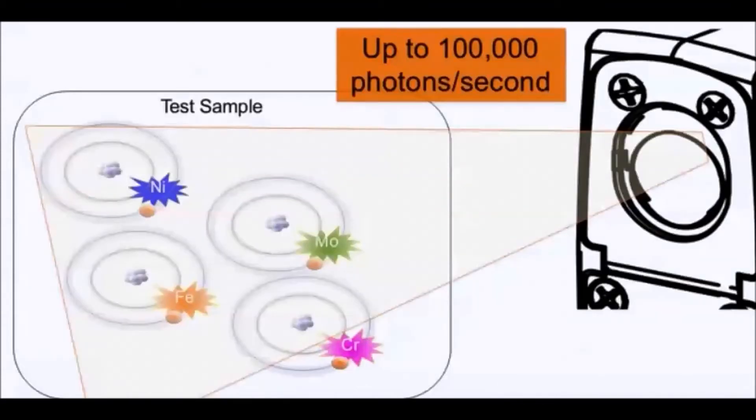While the slide diagrams that we've been looking at show single atoms, in reality tens of thousands of signature X-rays are captured by the detector every second. As long as the sample's surface is representative of the entire sample, fast, accurate, and quantitative results can be achieved in just a few seconds.